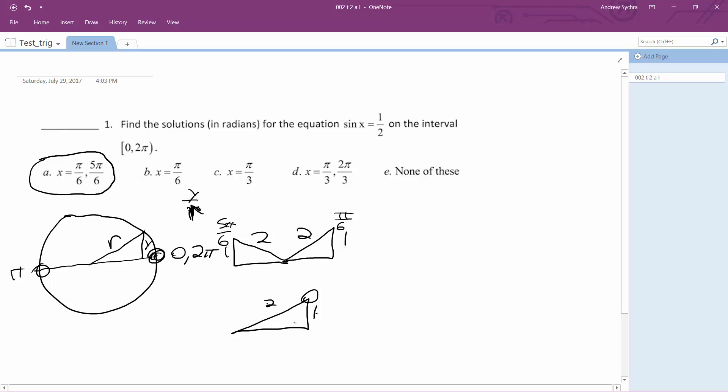if it was at pi over 3, it would be equal to root 3 over 2, not 1 over 2, and cosine would be equal to 1 half.